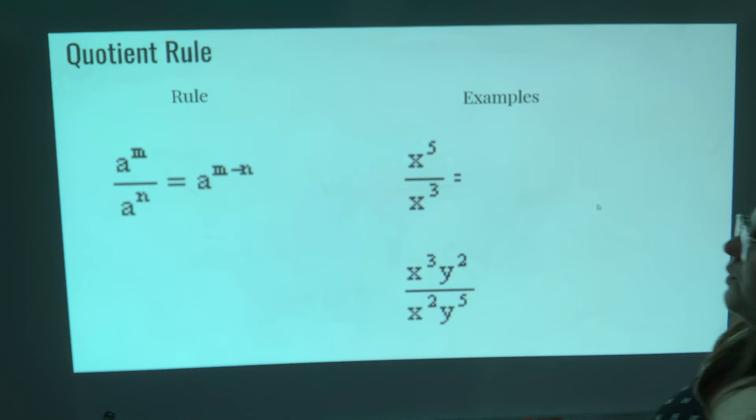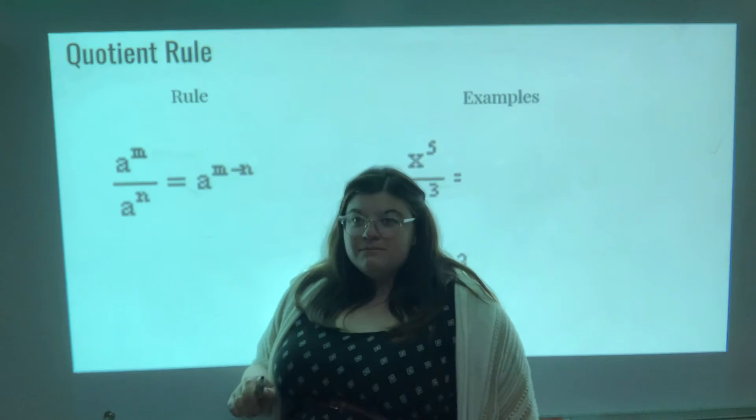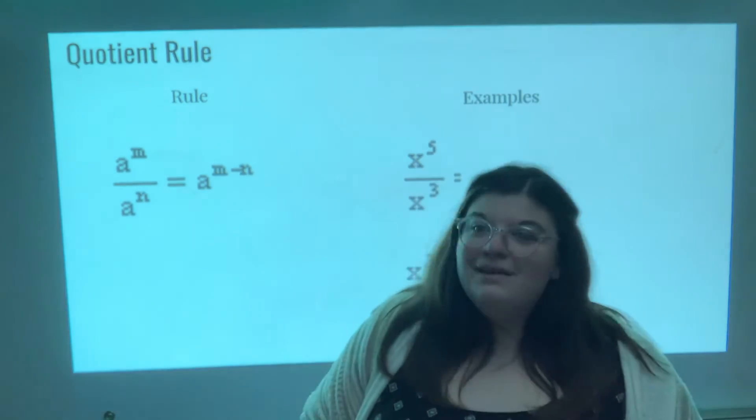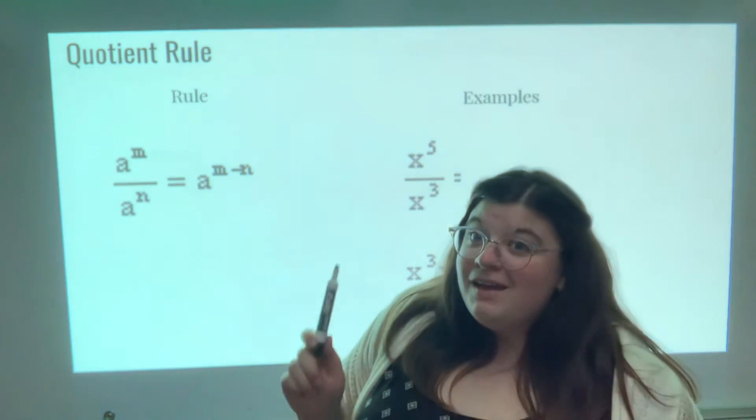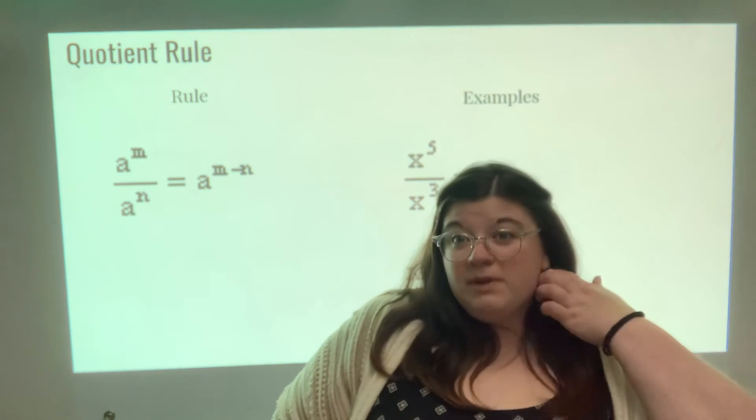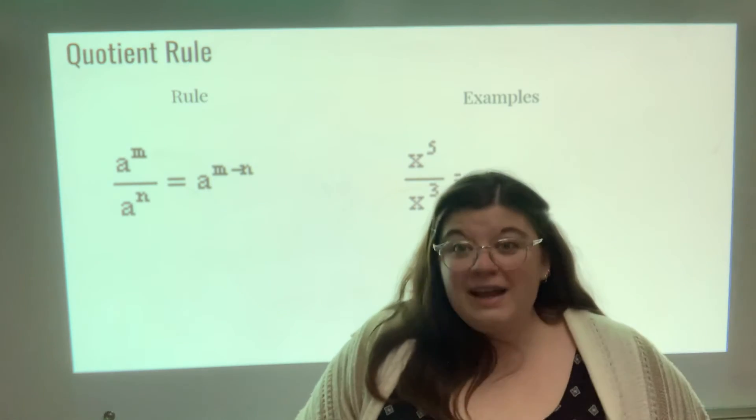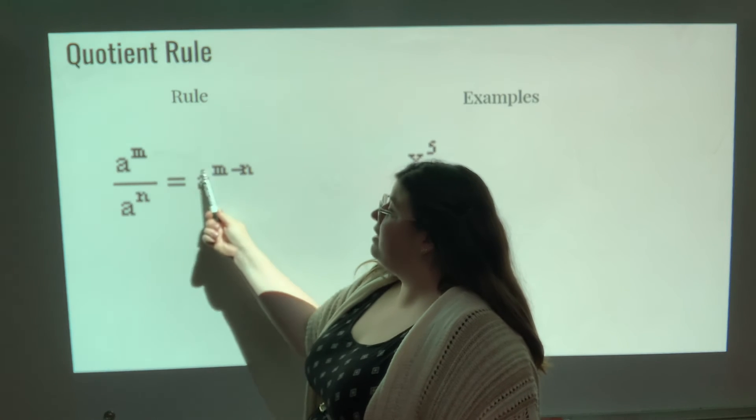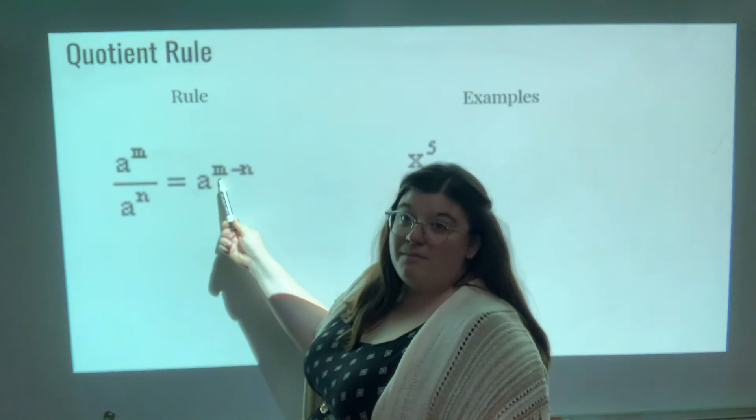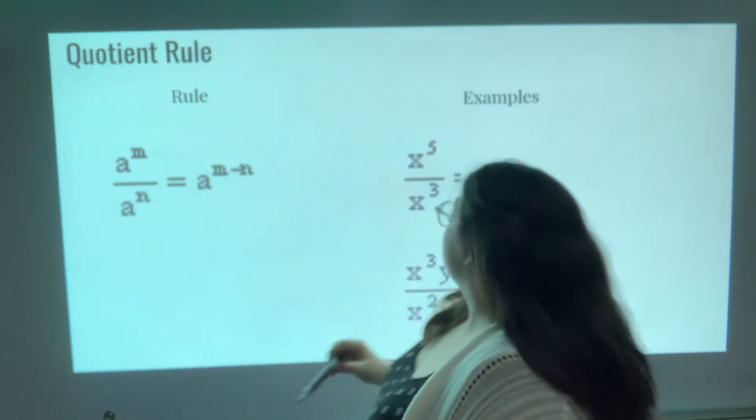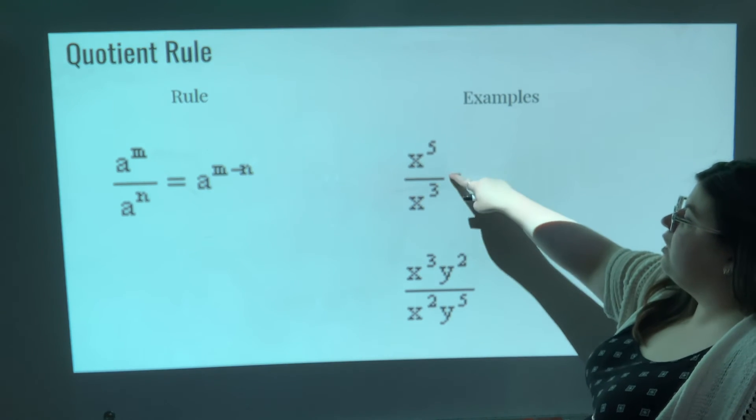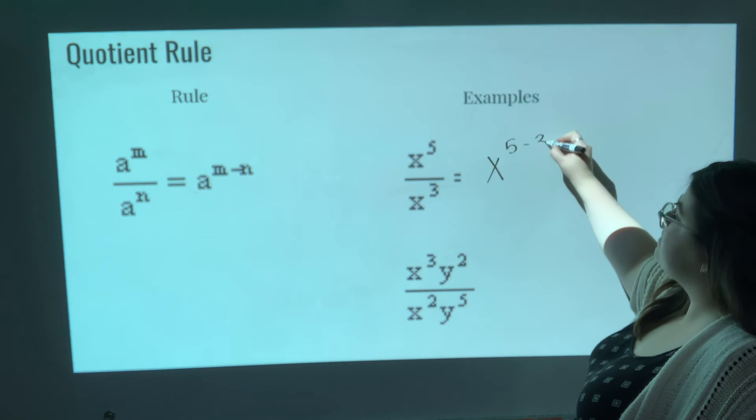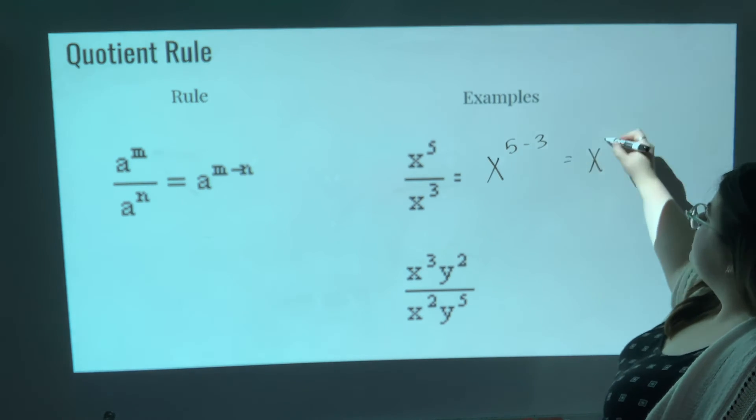I think this is one of the last ones here. A to the M divided by A to the N—quotient rule. Quotient means division; we're writing it as a fraction. Instead of adding your exponents like we did when we multiplied them, we are just going to subtract our exponents. So here, subtract your exponents, keep the same base: A to the power of M minus N. So here I have X to the 5th power over X to the 3rd power. Keep the same base, subtract those exponents—same thing as X squared.